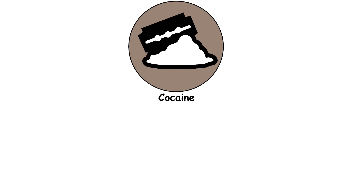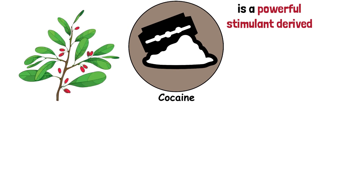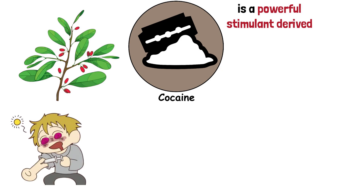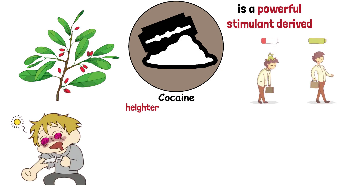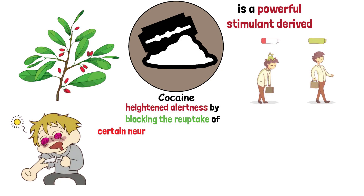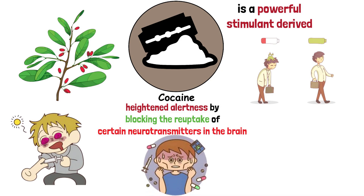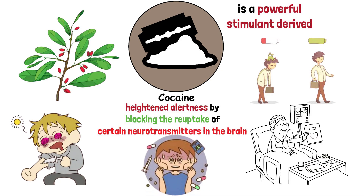Cocaine is a powerful stimulant derived from the coca plant. It produces intense euphoria, increased energy, and heightened alertness by blocking the reuptake of certain neurotransmitters in the brain, but it is highly addictive and can cause serious health issues.